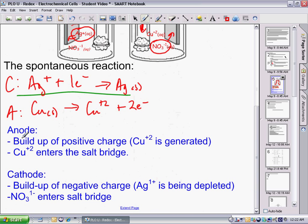With the anode, there's a buildup of positive charge. Copper +2 is generated. Copper +2 enters the salt bridge.